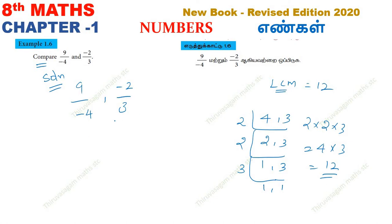2, 4, 3, 1, 4, 9 is equal to 9 by 4. 2 is equal to 3. 3 is equal to minus 2 by 3.